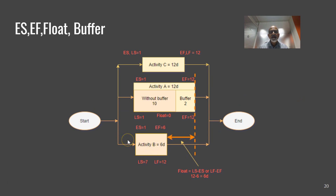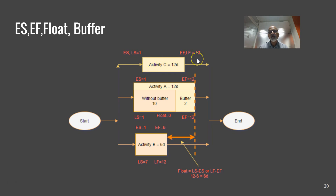Here is a project with just three activities. This is the start of the project. Activity A has a total duration of 12 days — 10 days of actual work plus 2 days of buffer. Activity B has a duration of 6 days and activity C has a duration of 12 days. Starting all on day 1: activity A completes on day 12, activity B completes on day 6, and activity C completes on day 12.